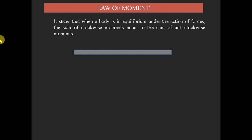Consider a body provided with a support at point O. With only one support, the body will not be in equilibrium because of its weight — it won't be in a balanced position. To make it in equilibrium, we need to provide forces on both sides. Two forces are given: F1 acting downward and F2 also acting downward, making the body balanced.